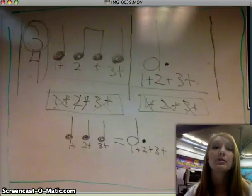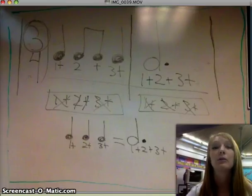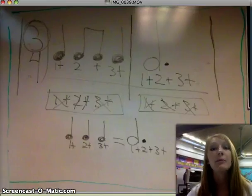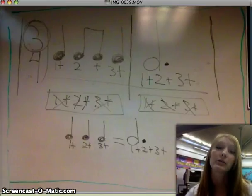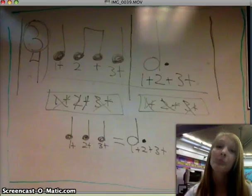So those are some examples using the 3-4 and 2-4 time signatures. Hopefully with all this information from part 1 and part 2, you will be able to write in the counting for any of those time signatures. I hope this helps you with your counting, and thanks for watching.